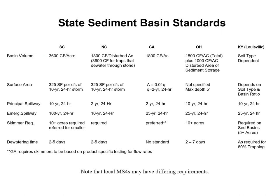It's interesting to look at different state standards. Basin volume requirements vary: some states require 3,600 cubic feet per acre, while North Carolina and Georgia use 1,800 cubic feet per acre. Ohio requires 1,800 cubic feet per acre plus an additional 1,000 cubic feet per acre of disturbed area for sediment storage. Kentucky's requirement is soil-type dependent using a calculation. For surface area, standards are typically based on a 10-year or two-year storm. Ohio does not specify surface area but has a maximum depth of five feet.